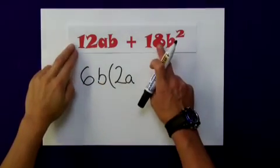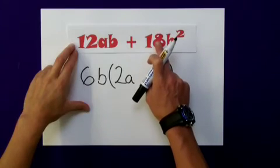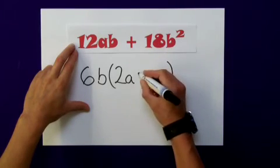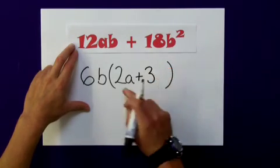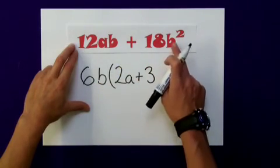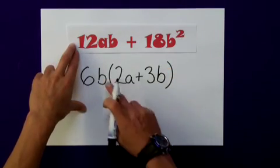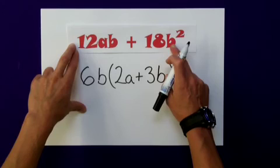A little trickier with this term now. I need to have 6 multiplied by something to give me 18. Well, that would be, again, positive 3. But I need b squared. b multiplied by something gives me b squared. Well, in fact, that's actually b itself. Just as in x times x is x squared, b times b is b squared.